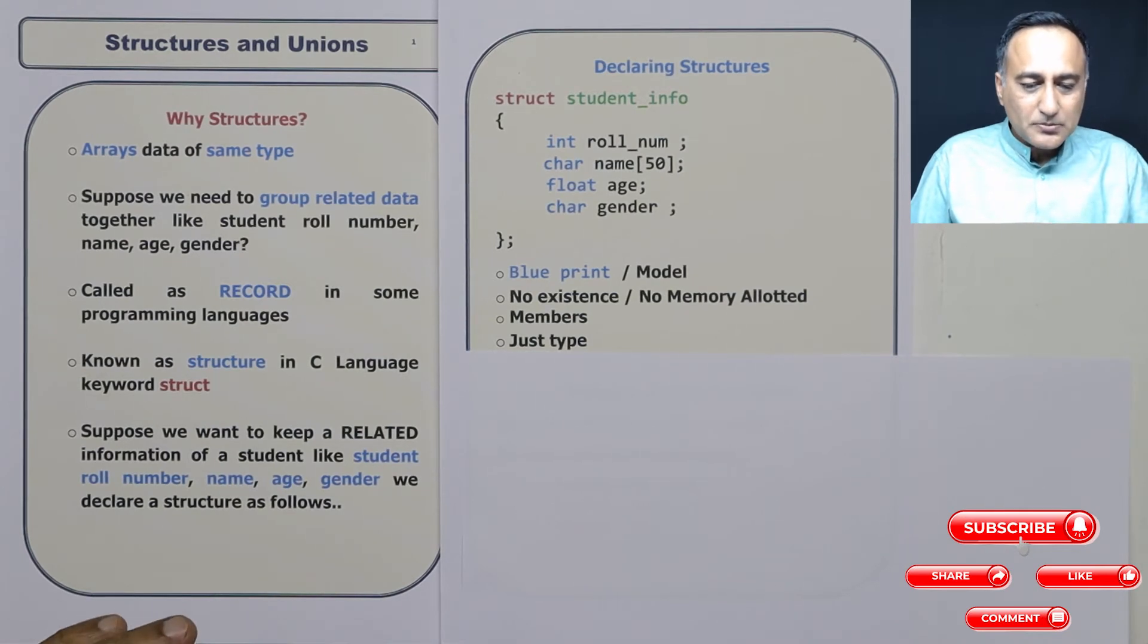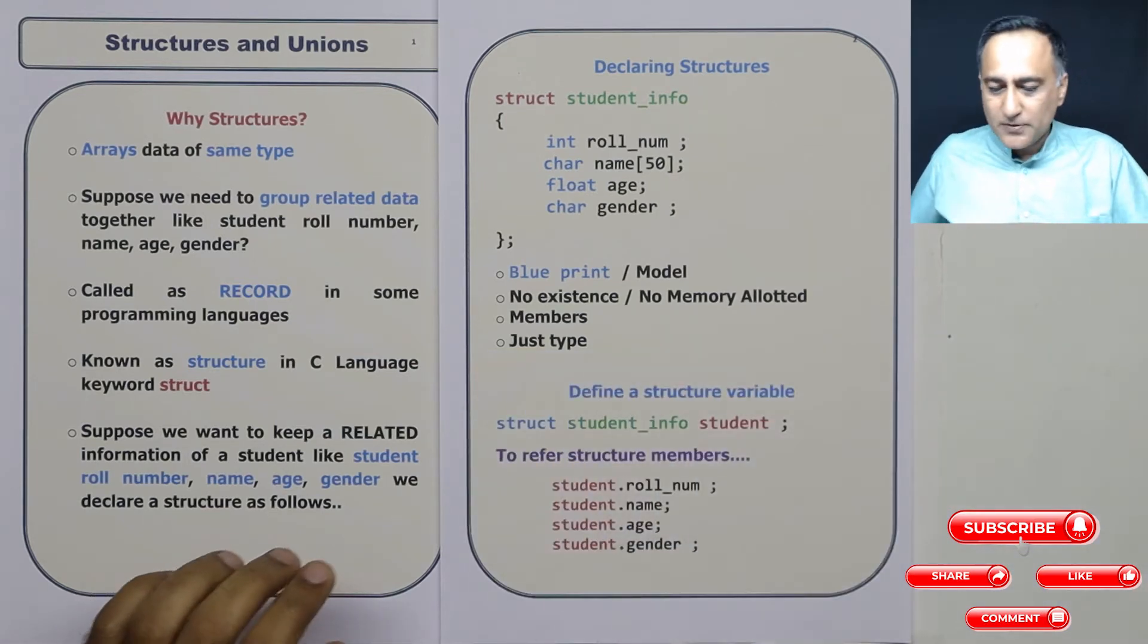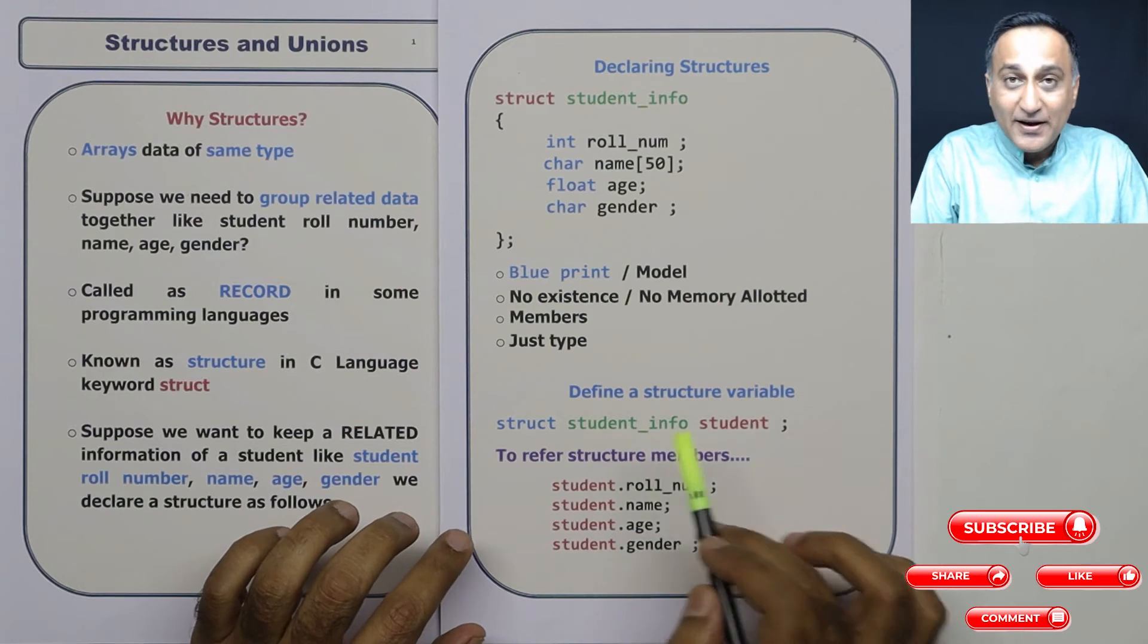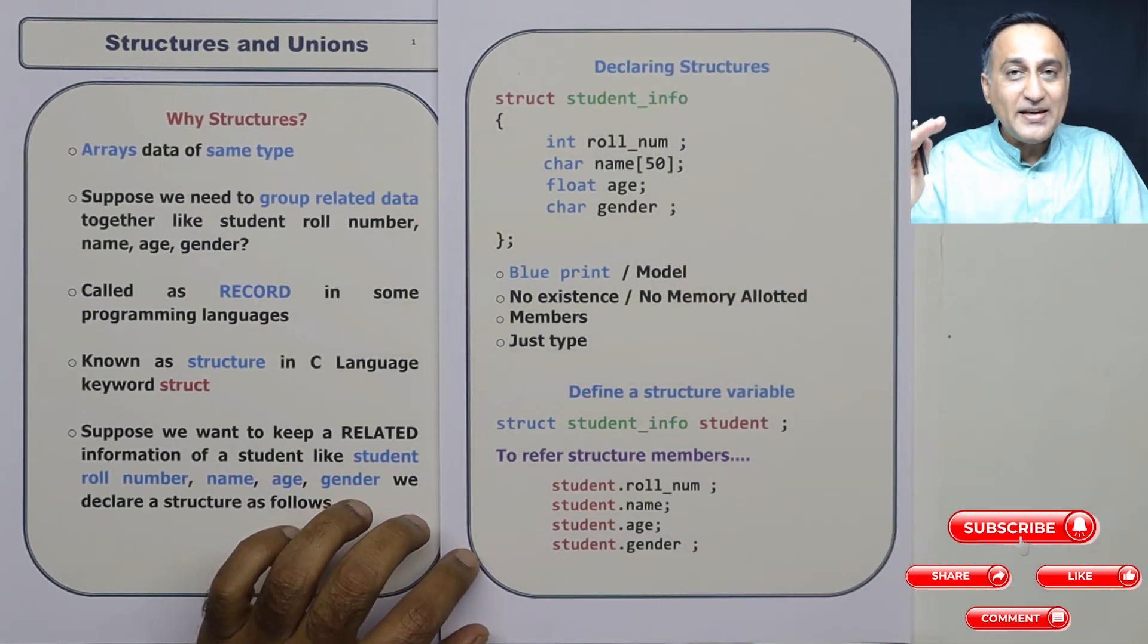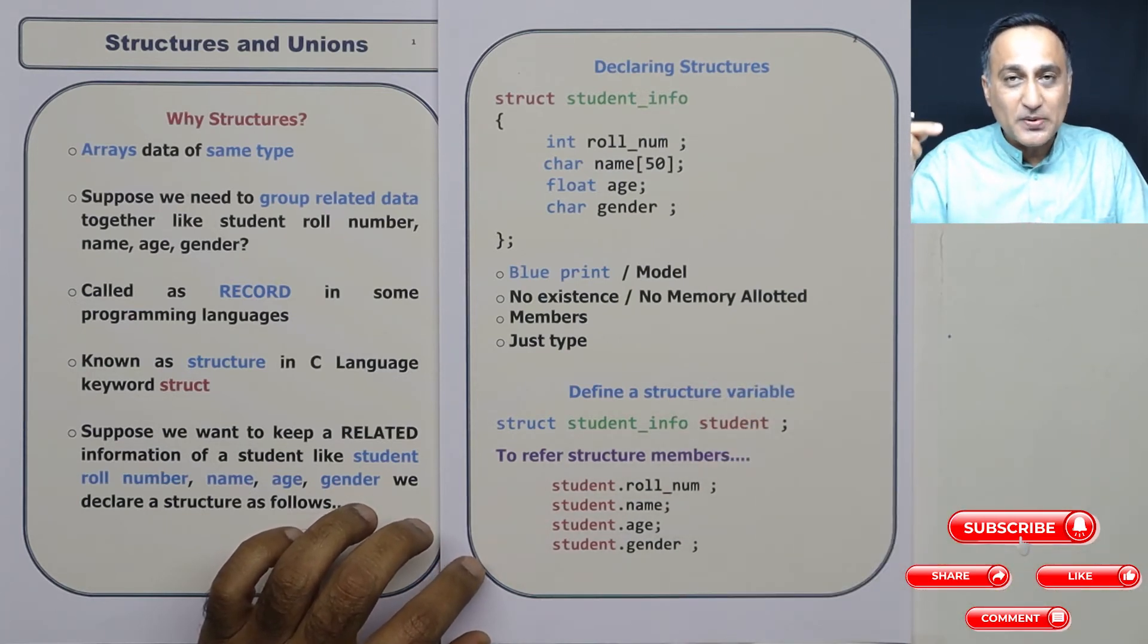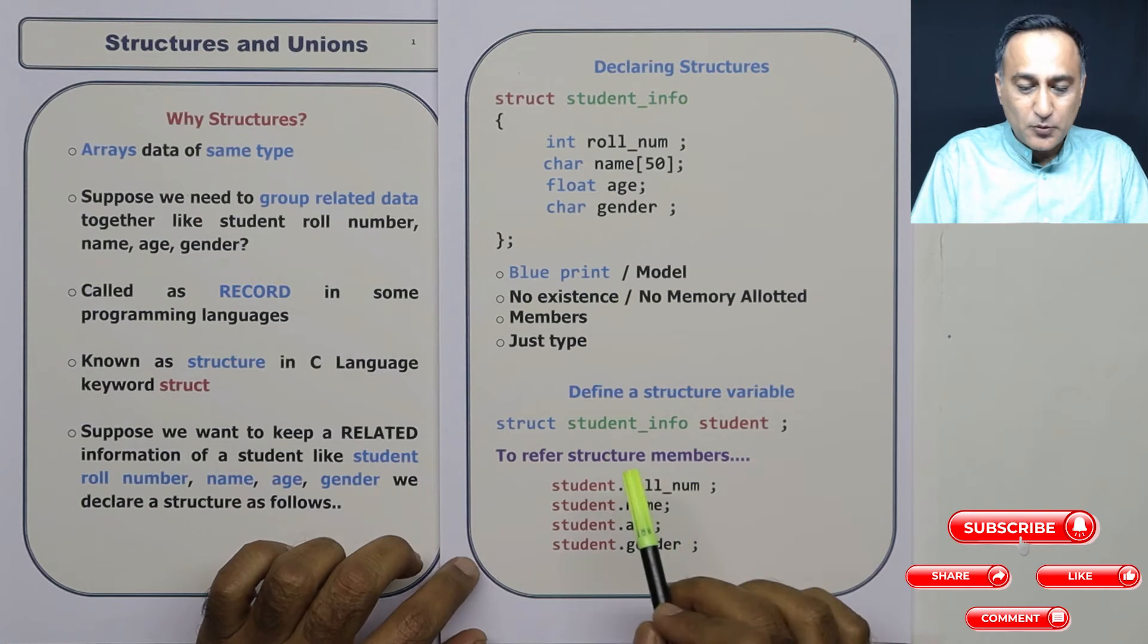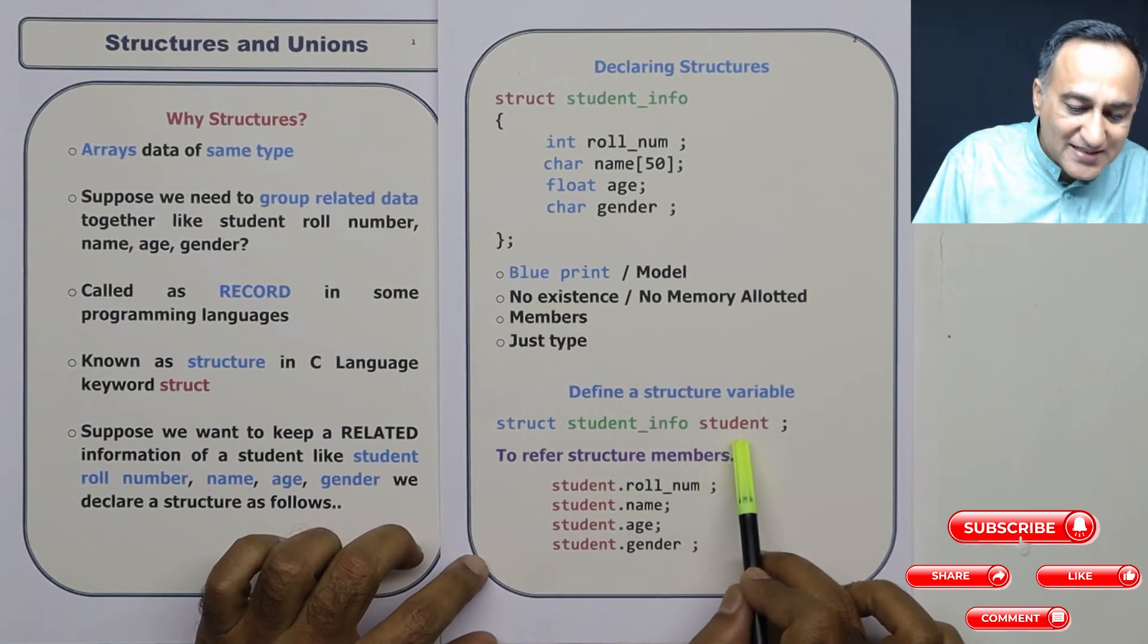Now, the major part is over because you have defined a model or a blueprint of a structure. Now suppose you want to define a structure variable, here you're declaring a structure, declaration only indicates the model, definition actually allocates the space for a variable. So suppose here I say struct student_info and I say student.